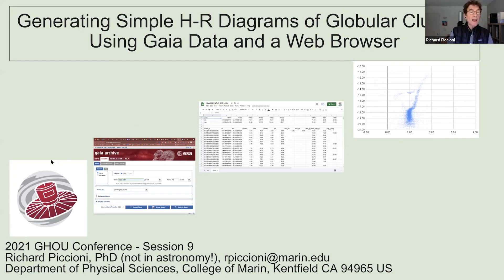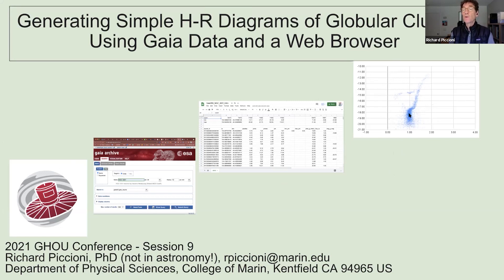You start out with the Gaia database, which is enormous. You do a search using their website, you download the results of that search into a Google spreadsheet, and then you make a nice graph. This is a Hertzberg-Russell diagram, also called a color magnitude diagram, and it shows many wonderful things about this particular globular cluster. You can infer something about its age and all kinds of other interesting things. And once you show the students how to do this, there are a lot of other things they will be able to figure out on their own.